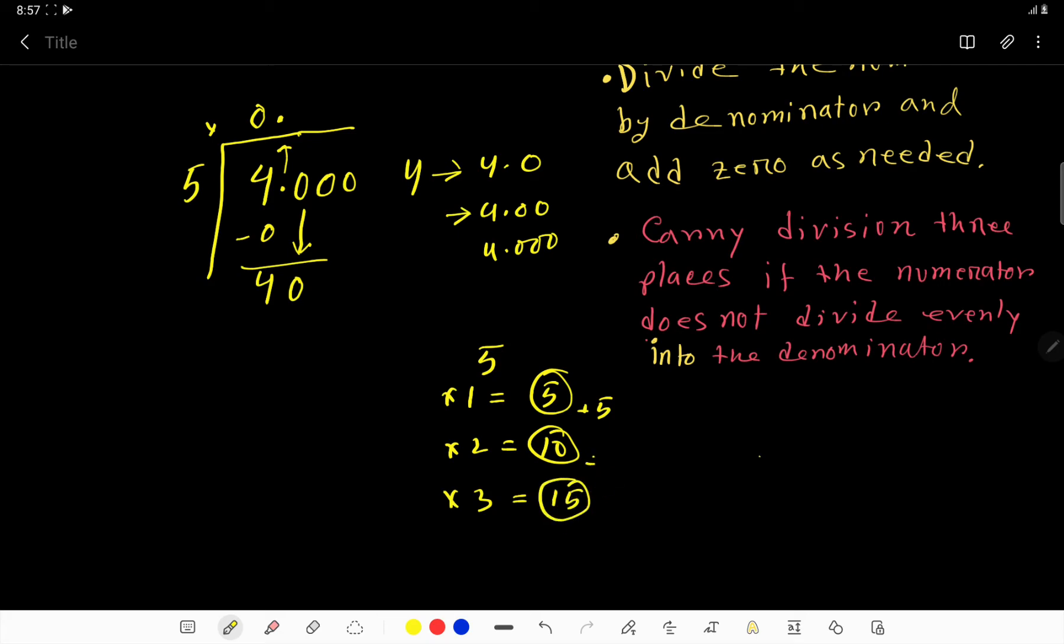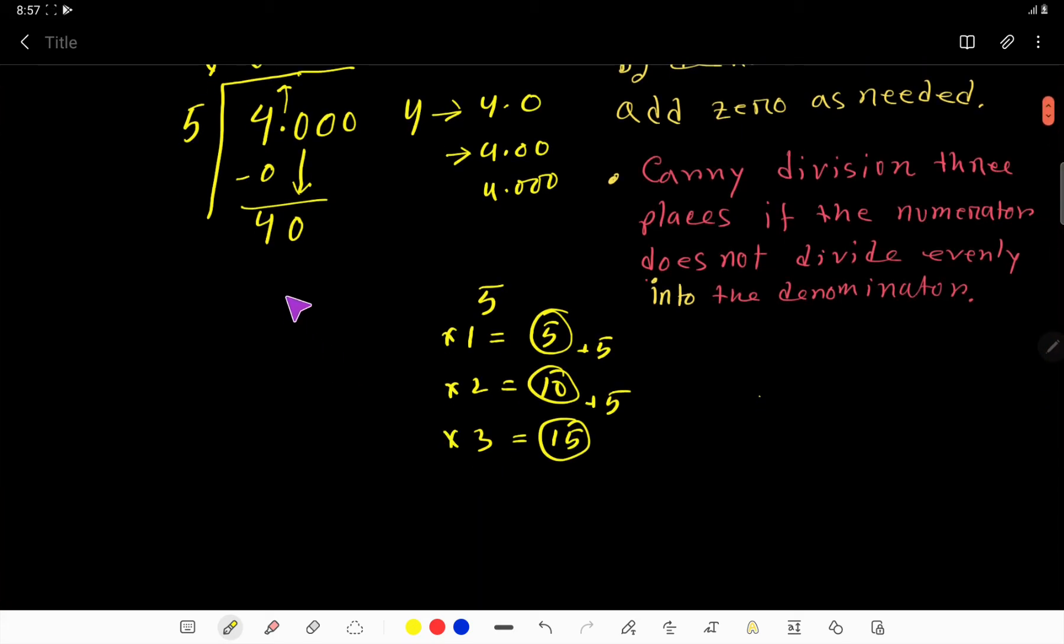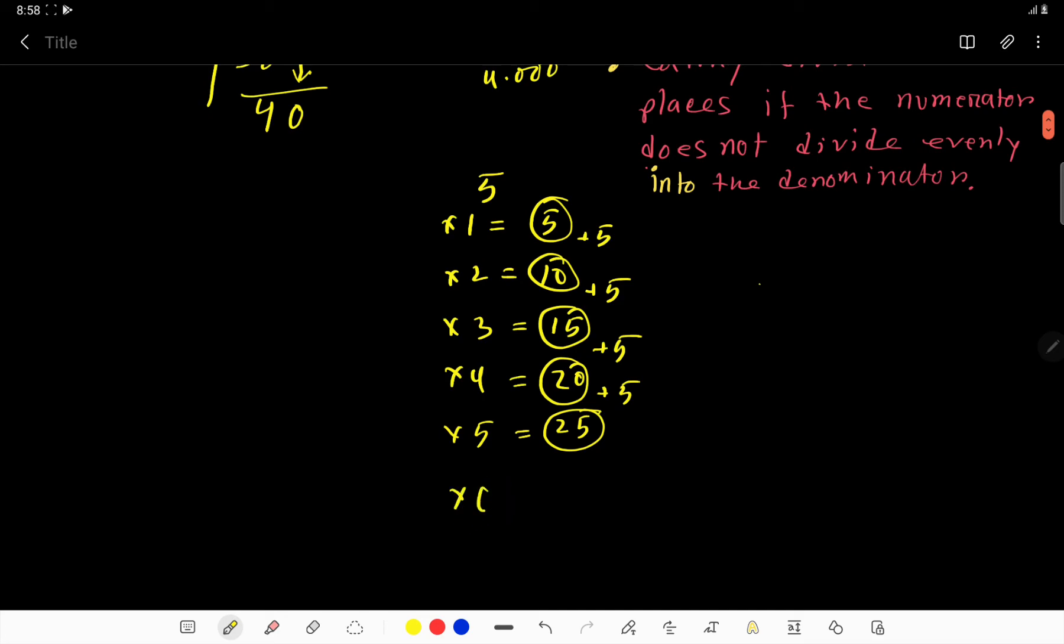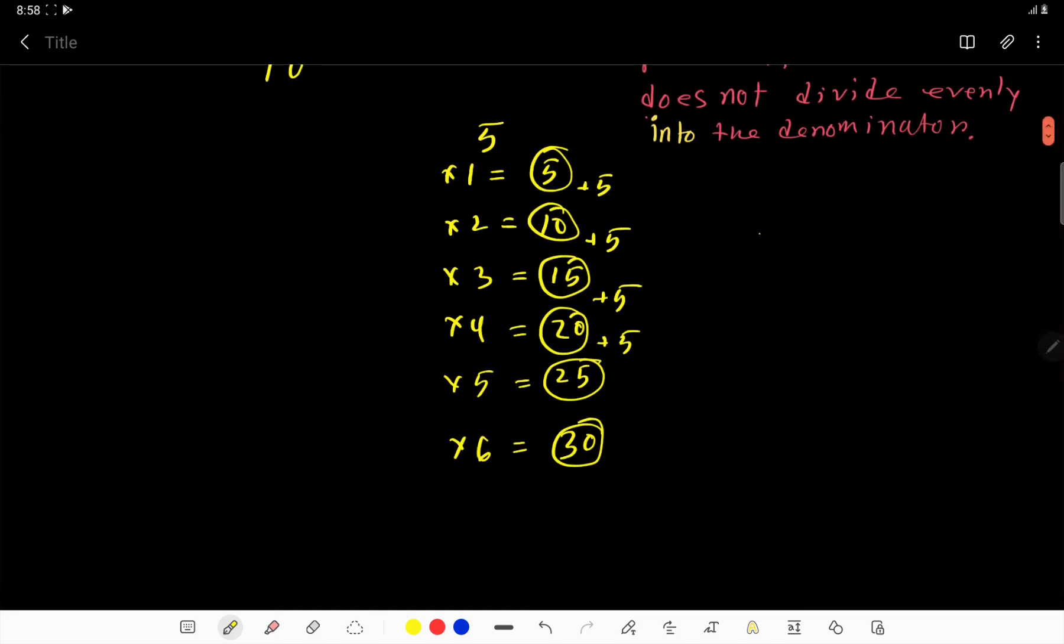You have to go up to 40 or more than 40 to some extent. So 5 times 4 is 20, 5 times 5 is 25, then 5 times 6 is 30, then 5 times 7 is 35.